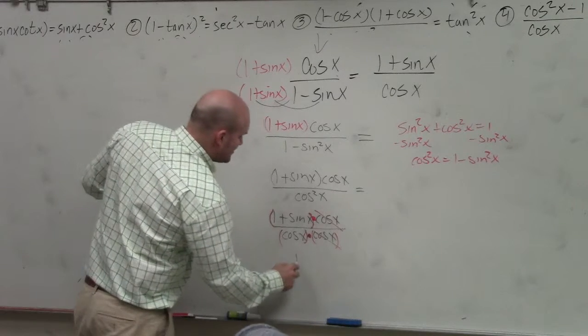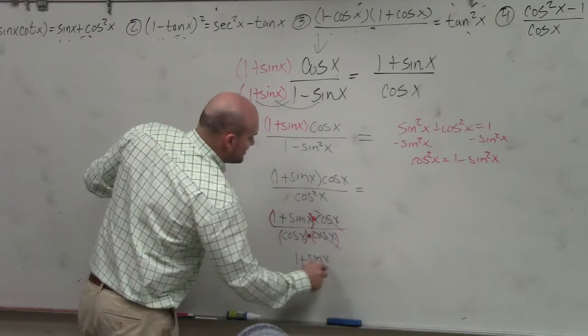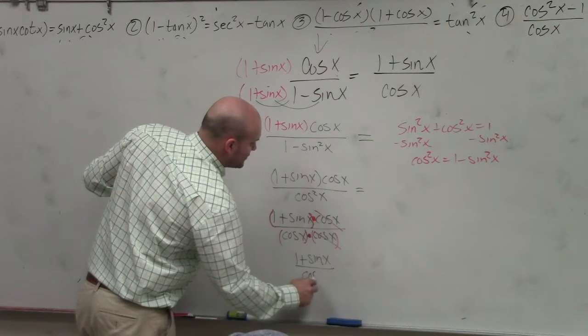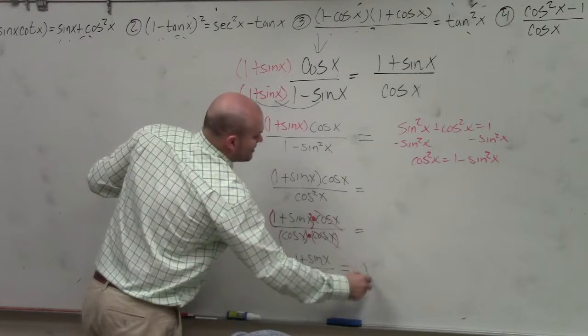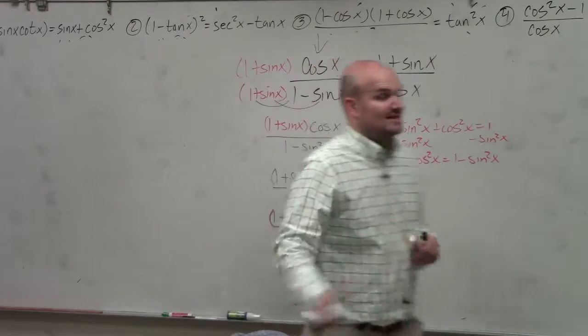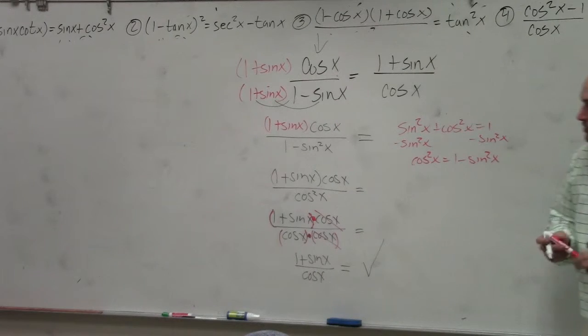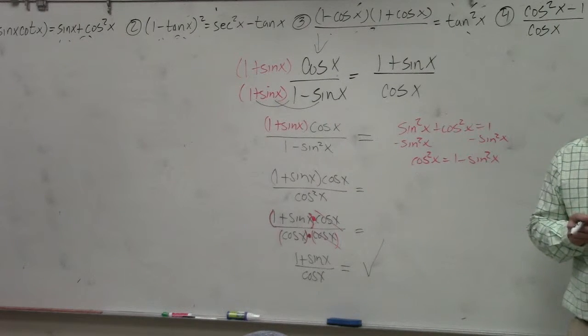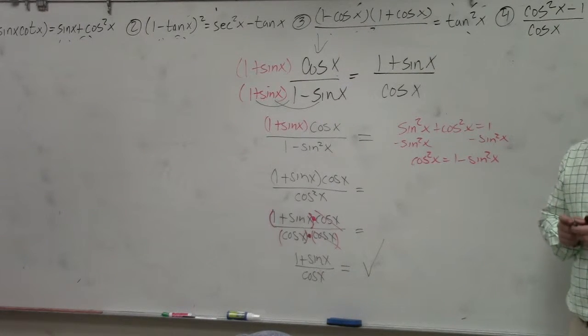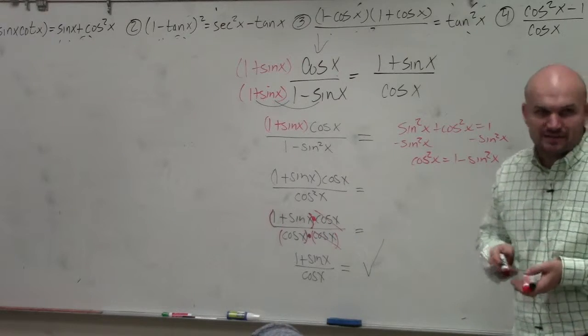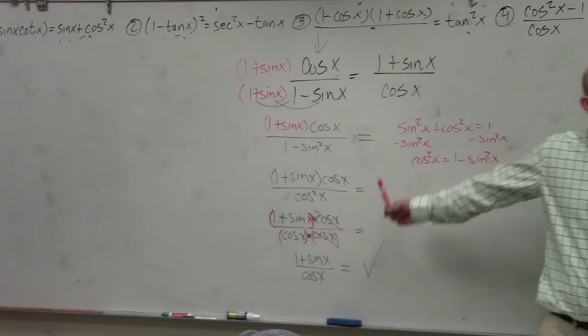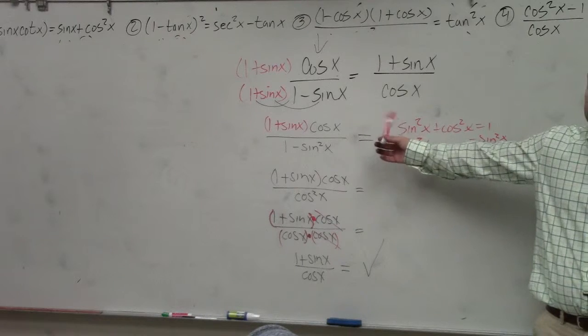So what I like to write is 1 plus sine over cosine of x equals, and then I'll just draw a nice little checkmark. That is how I expect your work to be done. You don't need to show me every single step like I did, but I do need to be able to follow you mathematically to make sure you arrived at it. That's how I expect your work on a test and on your homework.